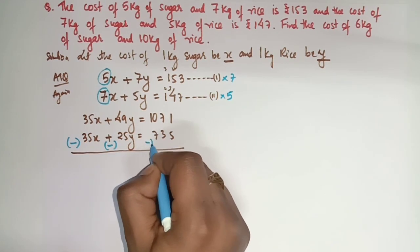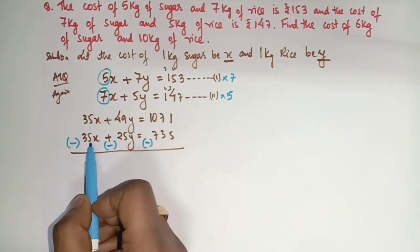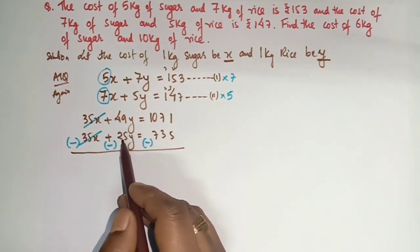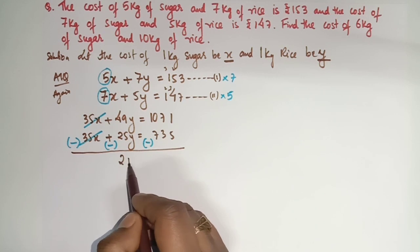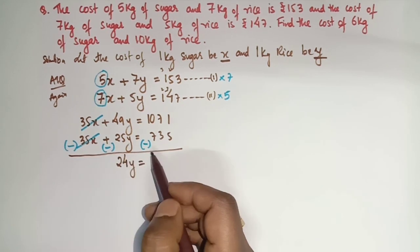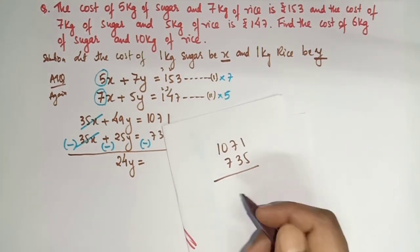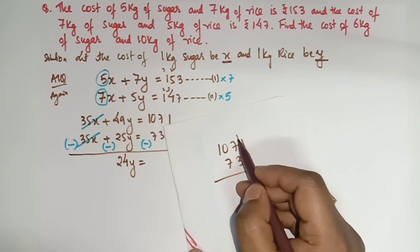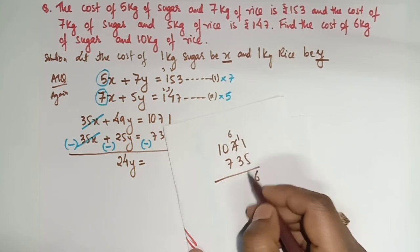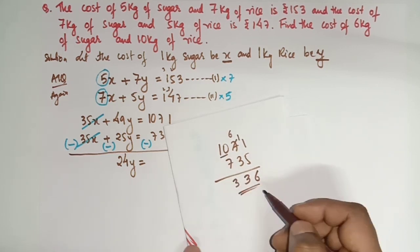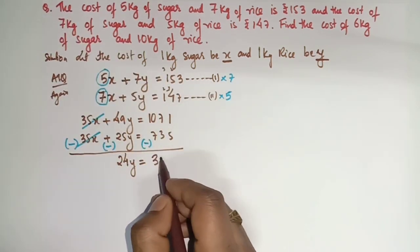That is why it is called the Elimination Method. Now: 49y − 25y = 24y. On the right side: 1071 − 735 = 336. So 24y = 336. Therefore y = 336 ÷ 24 = 14. So y = 14.